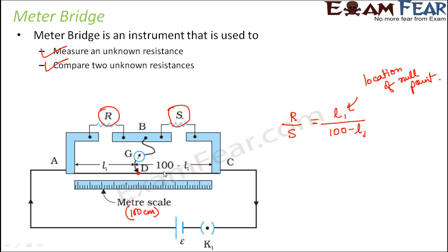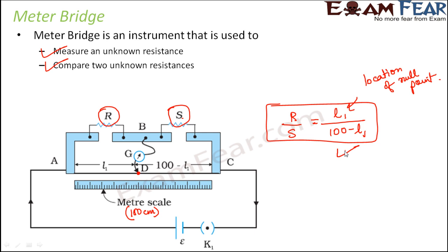The reason the denominator is (100 − L1) is that the entire meter scale is 100 cm, so the remaining segment is 100 − L1. This relationship allows us to calculate the value of an unknown resistance if the other is known, and we can also use it to compare two resistances R and S.